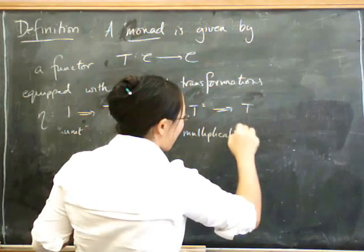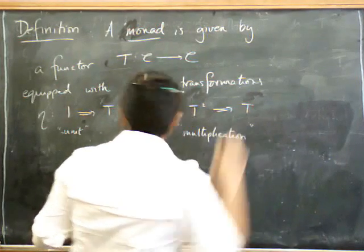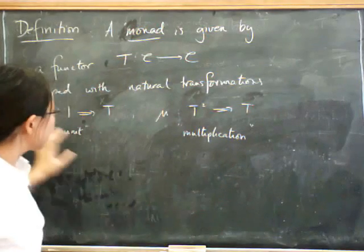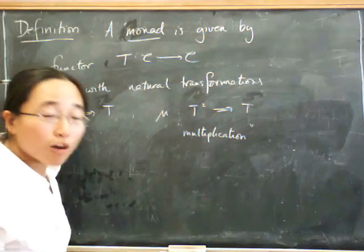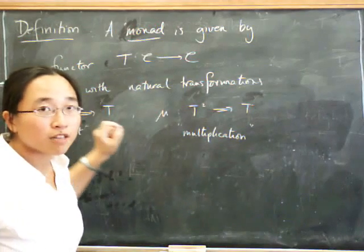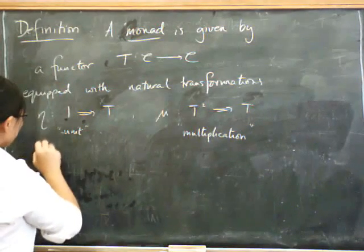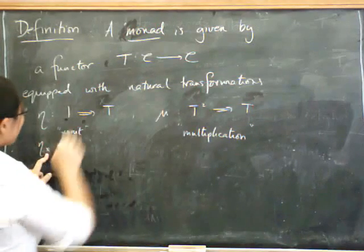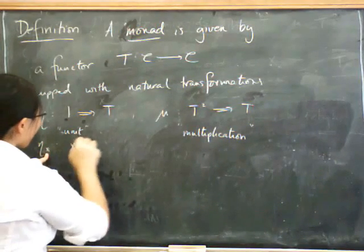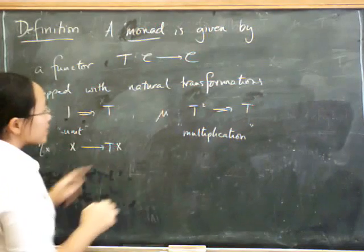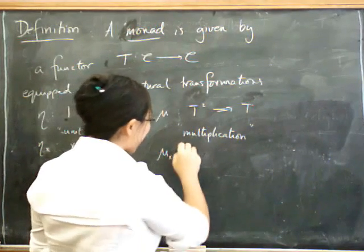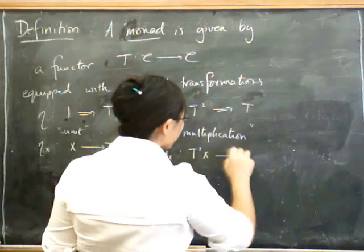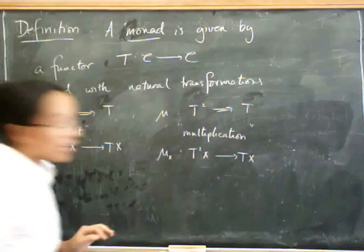And I hope you can hear me above that siren that's outside. Now let's just look at what this does in components, because it's a natural transformation. So of course that means that for every object in the category C, it has a component which is a morphism. So eta, the component of eta at the object x, is a morphism in C that goes from x to T of x. And what about mu? The component of mu at x is a morphism in C that goes from T squared of x to T of x. Now, of course, this has to satisfy some axioms.